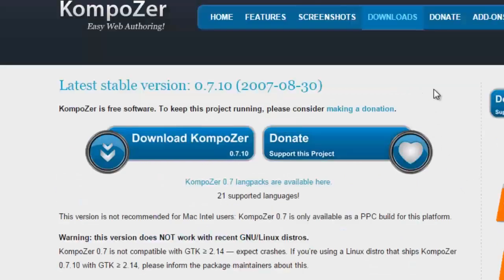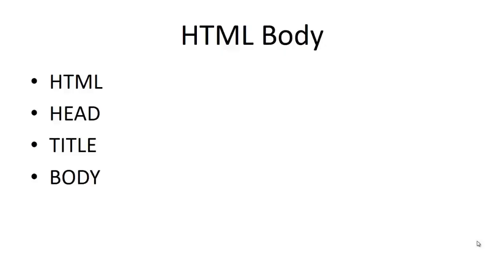Before I move on to video two, we're going to talk about the basic structure of an HTML body. Whenever you create a new HTML page, at the top you're going to have an HTML tag. Think about it wrapping around everything. You have the HTML tag, then you have the head right underneath it. If you think about a human body, you have the head, then maybe a name tag like the title, and then right below that you have a body. And then of course you have your feet and everything like that.